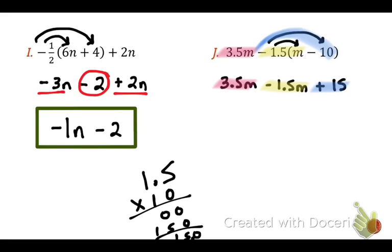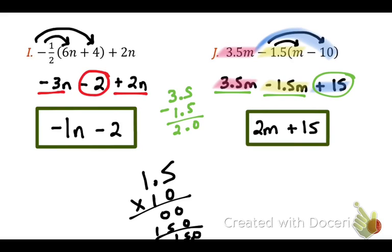Am I finished now? No. What do I need to do? Like terms. You're right. Subtract by combining those like terms. So now I have 3.5, and I need to subtract 1.5. When you do that, what do you get? 2. What family is that? 2m. And what do I do with the plus 15? Plus 15. Bring it down. How many of you would say you got that correct? All right. Christopher was my one who got it. Christopher, come on up and grab a candy.